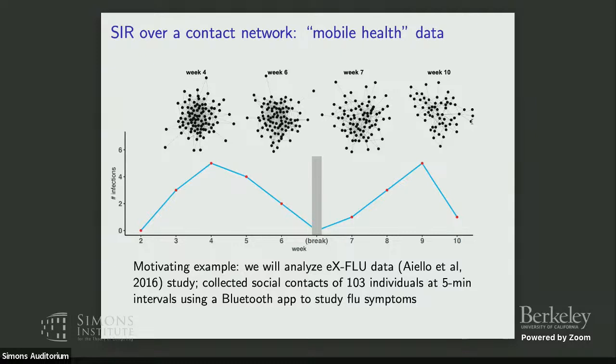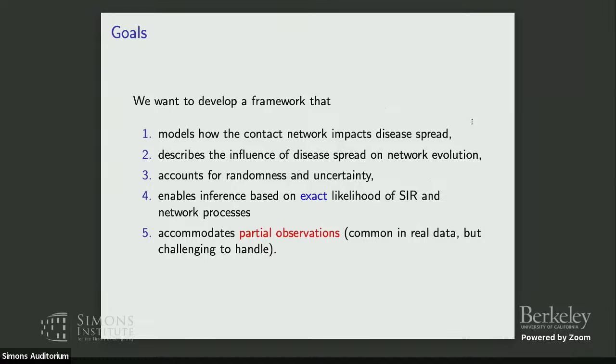In this talk I'll discuss one approach — a first attempt — to model the interplay between contact network and disease spread. The contact network impacts disease spread because you can only spread to your contacts, but your disease status might also describe how you choose to interact. So we want edge formation and deletion rates to possibly depend on the disease statuses of the vertices. We're focused on likelihood-based inference so that, if we believe the model, we're getting the right estimates with correct uncertainty properties.